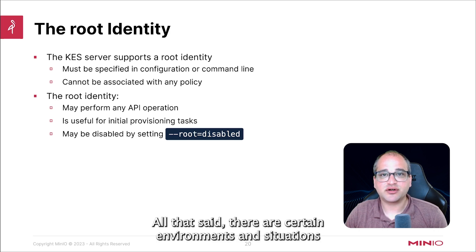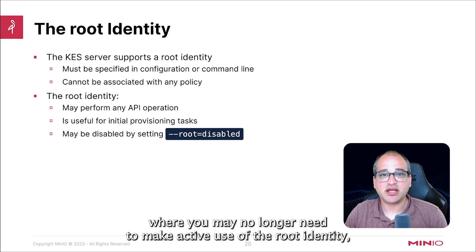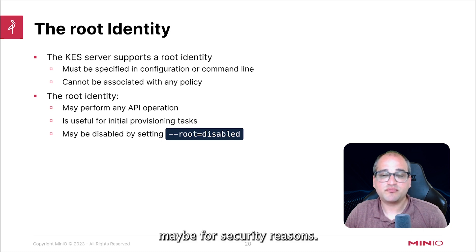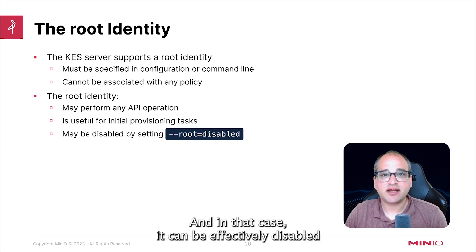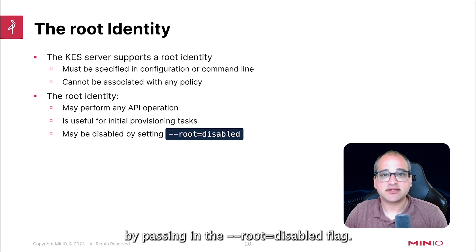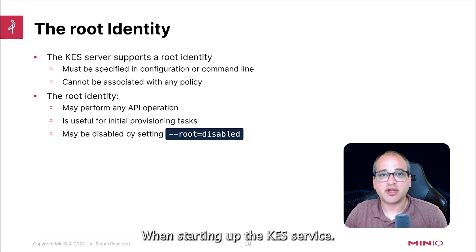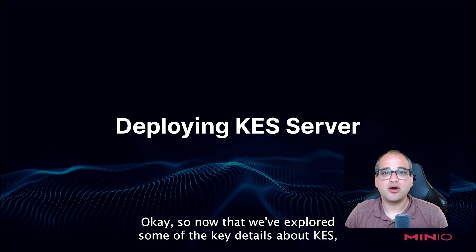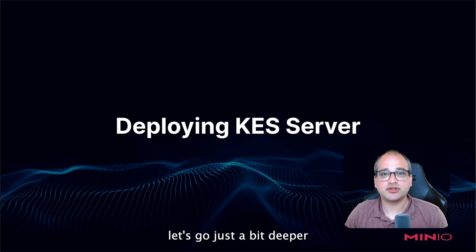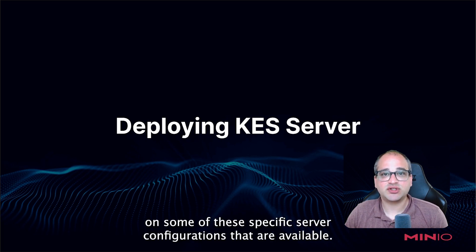All that said, there are certain environments and situations where you may no longer need to make active use of the root identity, maybe for security reasons, and in that case it can be effectively disabled by passing in the --root=disabled flag when starting up the KES service. Now that we've explored some of the key details about KES, let's go just a bit deeper on some of the specific server configurations that are available.